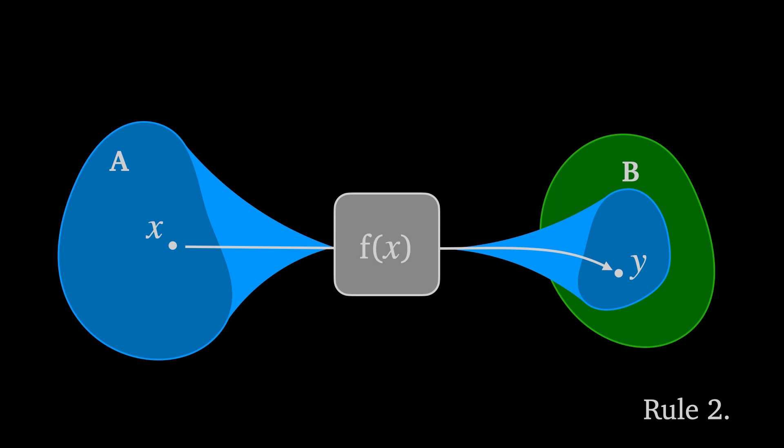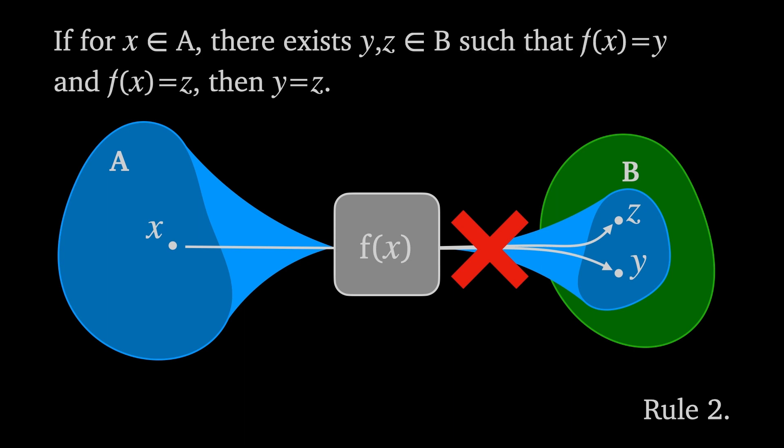By rule two, we also prevent a single value from the domain A being mapped to two distinct values y and z in the co-domain B. We say that if there exist y and z in B such that f(x) equals y and f(x) equals z for some x in A, then y must be equal to z.